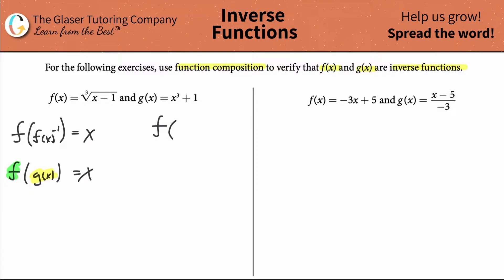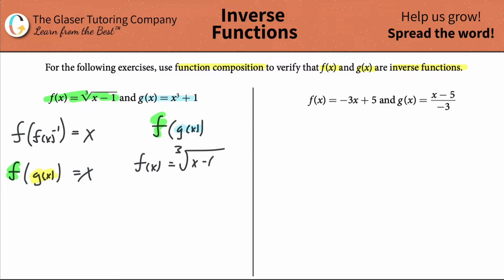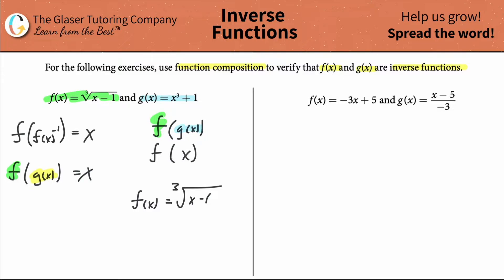So let's find f of g of x. Start with the outermost function and then work your way in. Write down your f function: f of x is equal to the cube root of x minus one. And now what I'm going to do is take my g of x function — this is really like saying f of x, and everywhere you have your x, you're going to plug in your g of x.